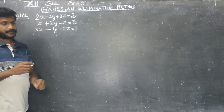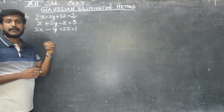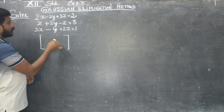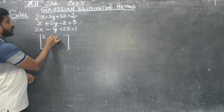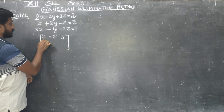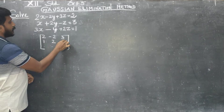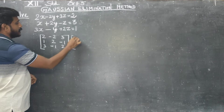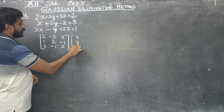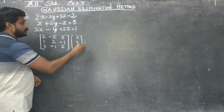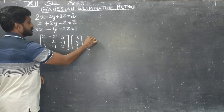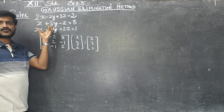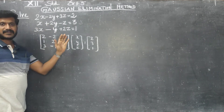Step number 1: First you have to write the system in matrix form. You have to write the coefficients of x, y, z in the matrix, followed by x, y, z equal to the constants 2, 3, 1.